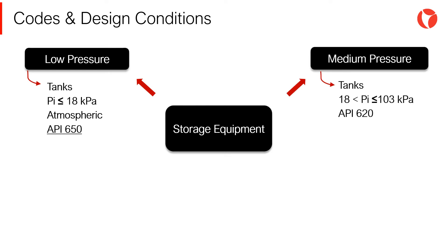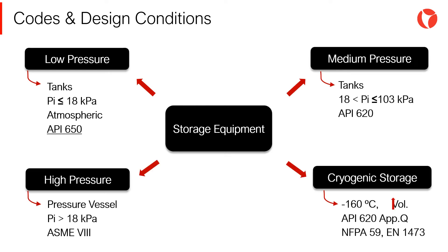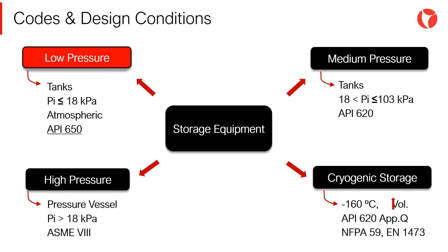Before reviewing the code organization and minimum requirements, it is convenient to establish the main differences between equipment used to store products. A good comparison can be made regarding the pressure level at which they operate. Storage tanks designed according to the API 650 code are also known as atmospheric or low pressure tanks, since they can only operate with internal pressures below 17 kPa.